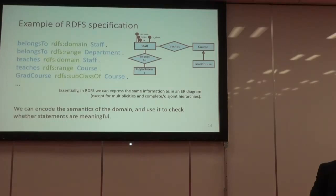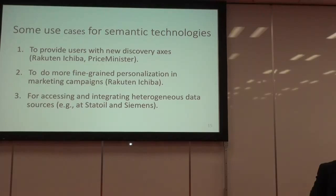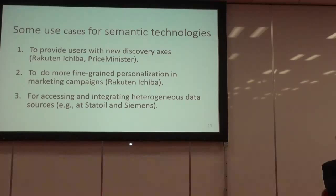This is an example of RDFS data format, which allows us to represent information that avoids meaningless statements like those we had before. That was a brief introduction to giving semantics to data and to data on the web. We now switch to two use cases that Martin will present from Rakuten, where this kind of semantic information is used. At the end, I'll take over again and talk about ontology-based data access, where semantics again plays an important role.